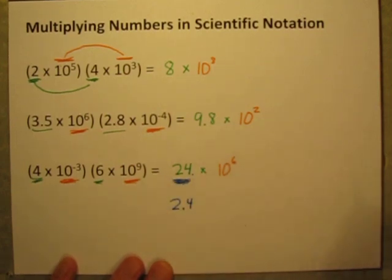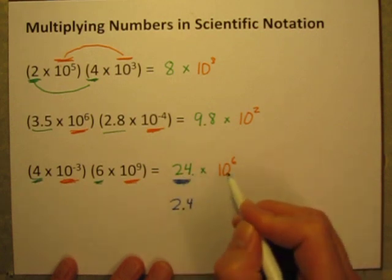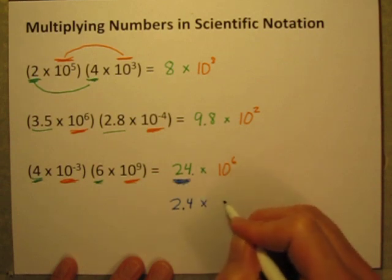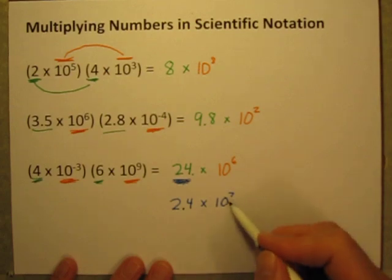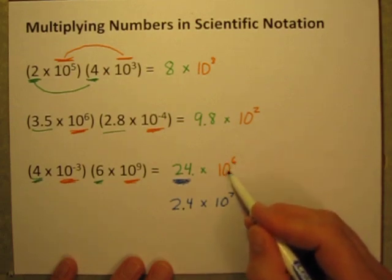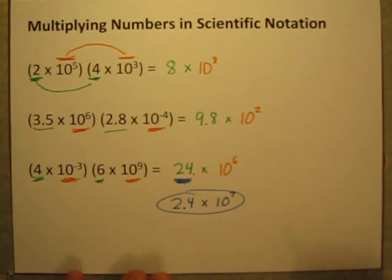But if I want the overall value to remain unchanged, I can't just start moving decimal points around. So if I make this one decimal place smaller, I have to make this one one decimal place bigger. So this becomes one place bigger than 10 to the 6th is 10 to the 7th. So the final answer is 2.4 times 10 to the 7th.